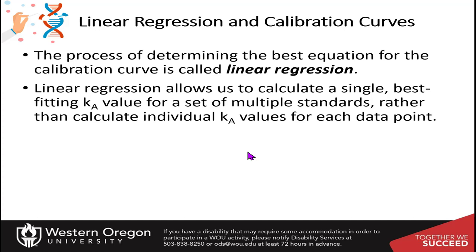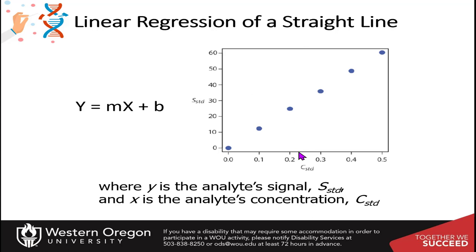These calibration curves are really important for enabling us to calculate the single best-fitting Ka value for a set of multiple standards, rather than calculating individual Ka values for each data point, because each data point might be off just a little bit. If we take multiple data points and use the average of all of them, it makes our data a lot stronger. The equation for our straight line is y = mx + b, where y is the signal of the standard and x is the concentration of the standard.